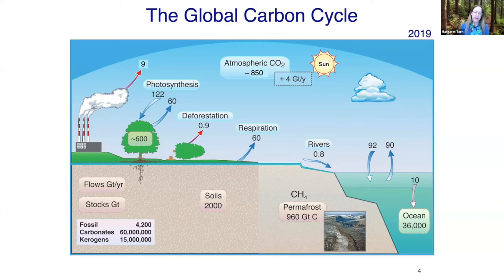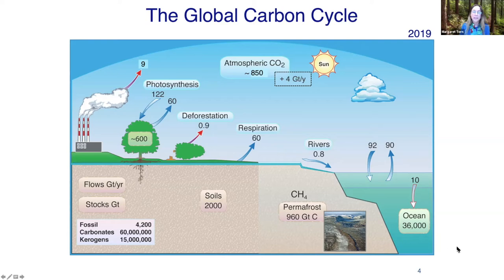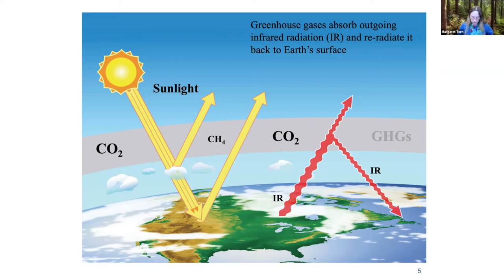I'm going to introduce you to two significant aspects of the carbon cycle that I study. The first is the greenhouse effect — the role of CO2 and methane in warming Earth's climate, moderating the amount of radiation that is re-radiated back to Earth's surface rather than escaping to space. I should note that water vapor is actually the most important greenhouse gas, but because we're focused on the carbon cycle, I don't have it shown here.